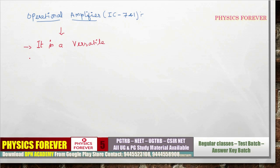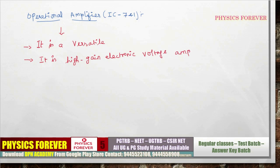One or two questions may be asked from this topic in the exam. The operational amplifier is versatile — it can be used in various electronic applications. The second point is that it is a high gain electronic voltage amplifier.